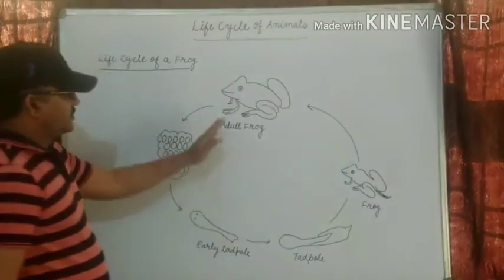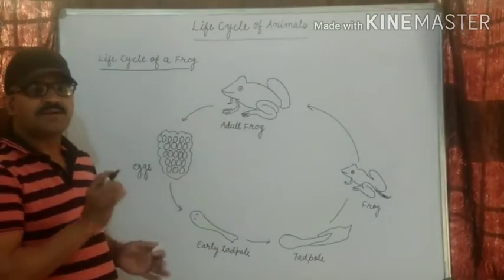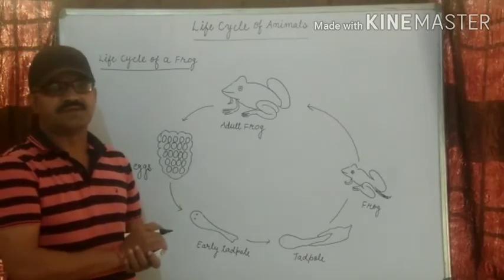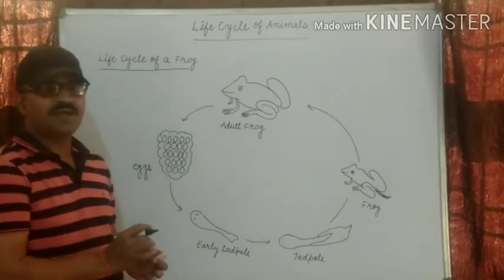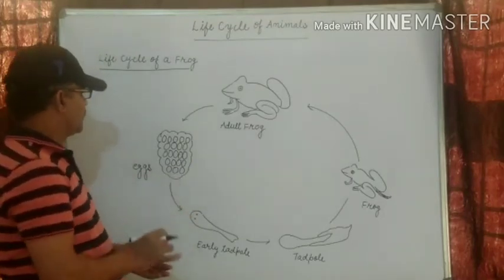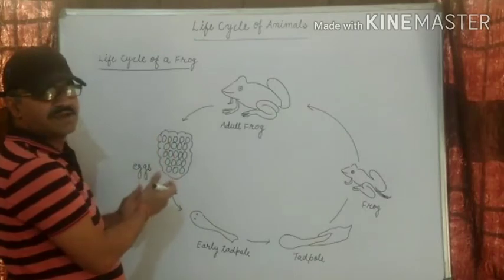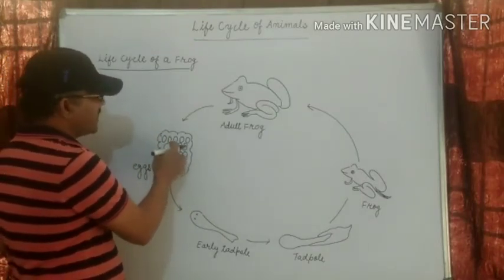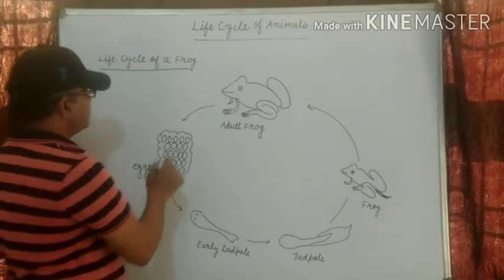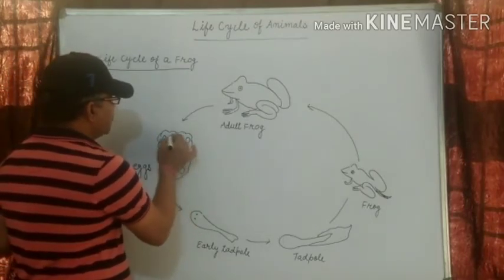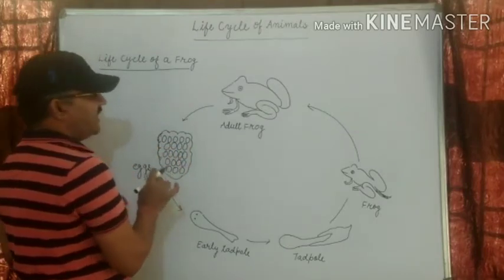First of all, a frog lays a cluster of eggs in a safe place in water. The cluster of eggs is called the spawn. They lay many eggs and the cluster is covered by a gelatinous structure that protects the eggs and helps the babies.